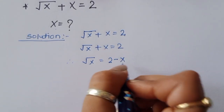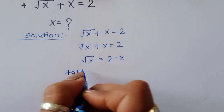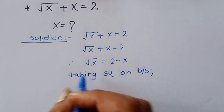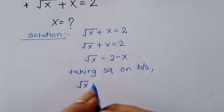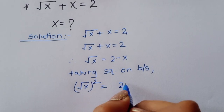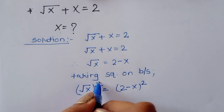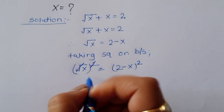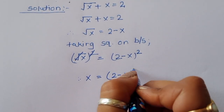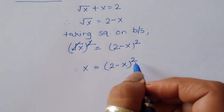Now we have to cancel this square root, so we take the square on both sides. We get (√x)² = (2 - x)². The square cancels the square root, so x = (2 - x)².